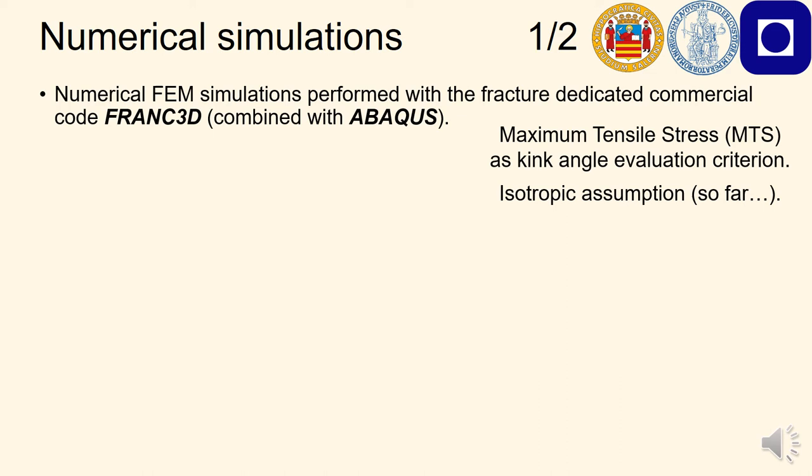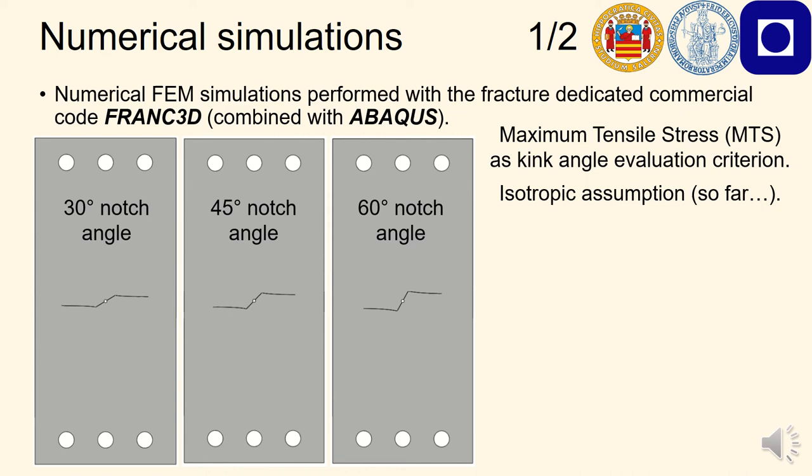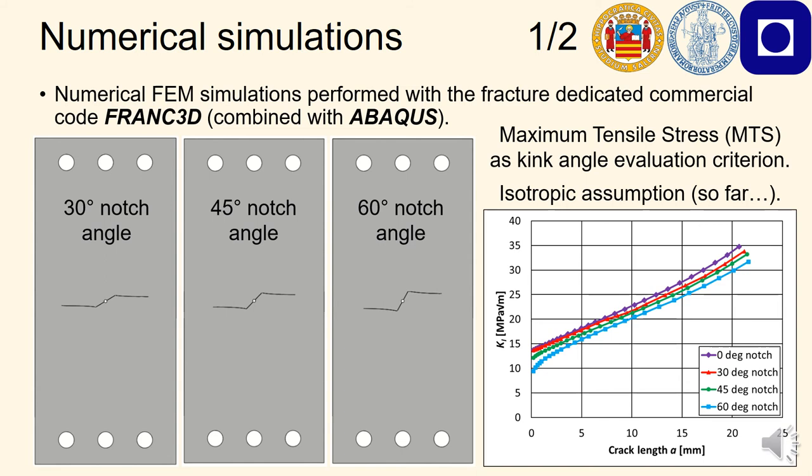At left, we can see the three crack paths simulated for the three non-null notch angles, whereas at the bottom right corner of this slide, we can see the variation of the K1 along the crack length for all the notch angles. We can see that, although the K values are very similar among them, they are slightly decreasing with the increasing of the notch angle. Higher deviations can be noticed only at the lowest crack sizes.